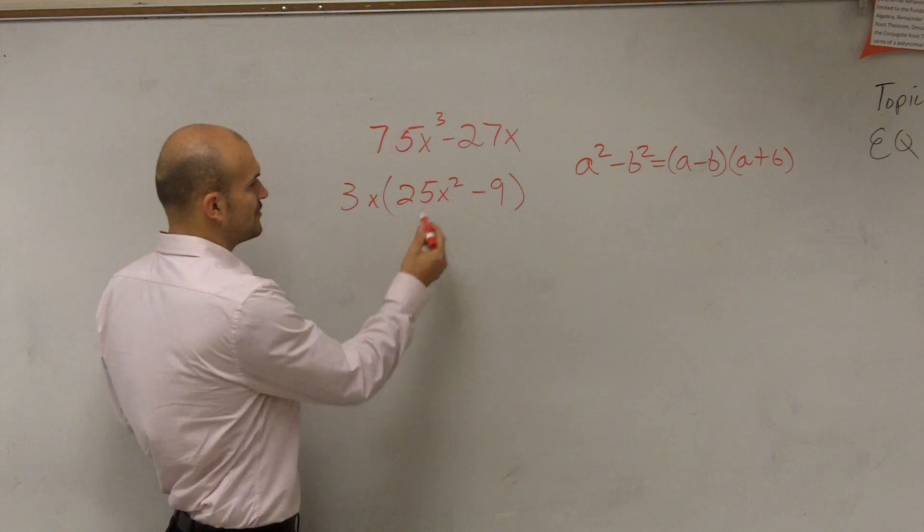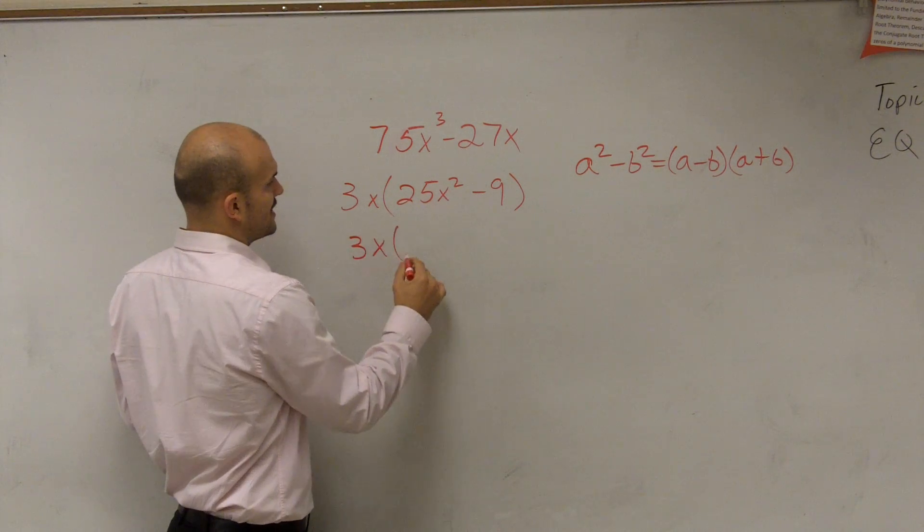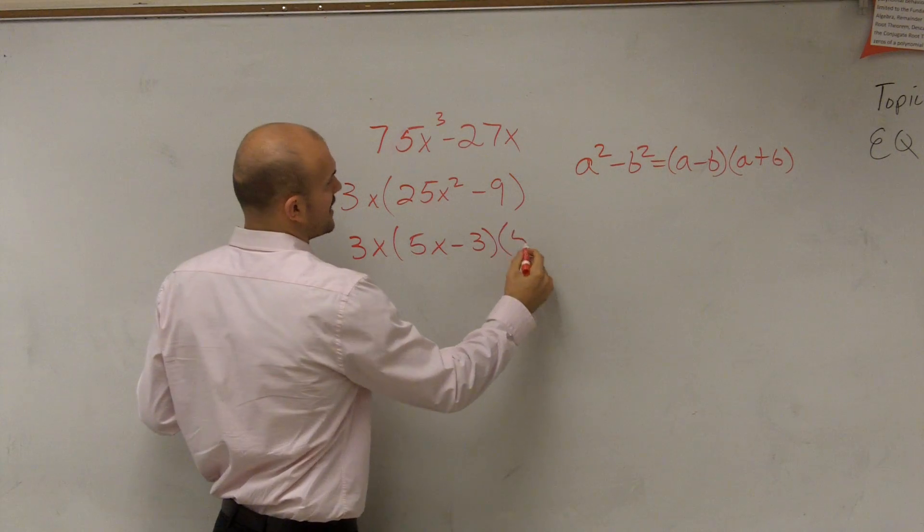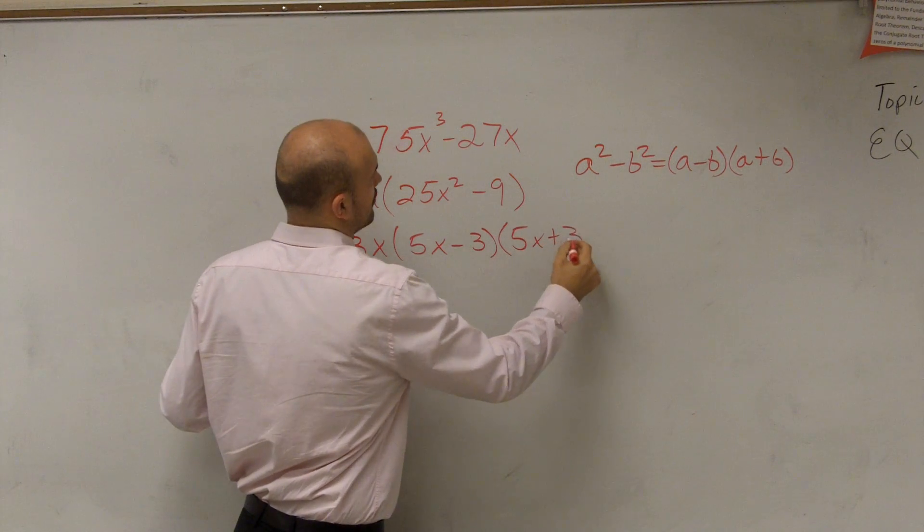So what I can do is I can rewrite this as (5x - 3)(5x + 3).